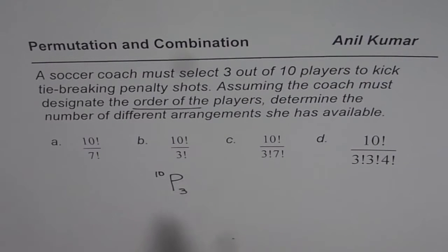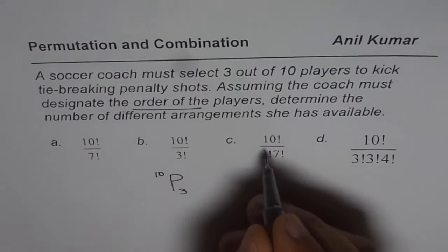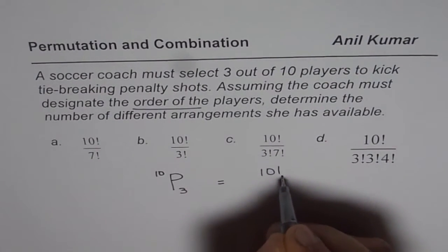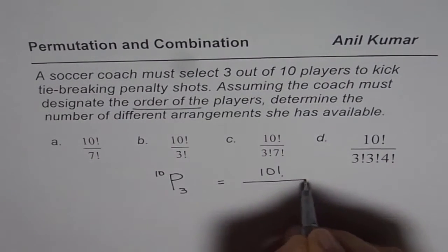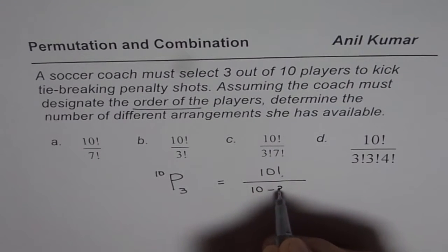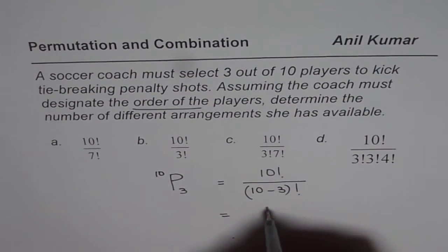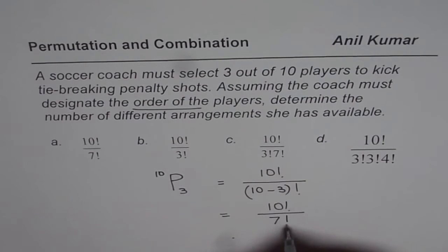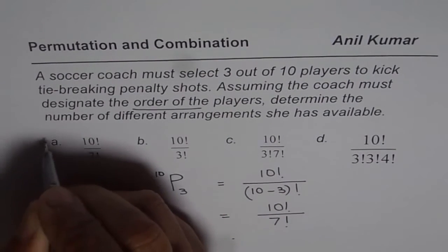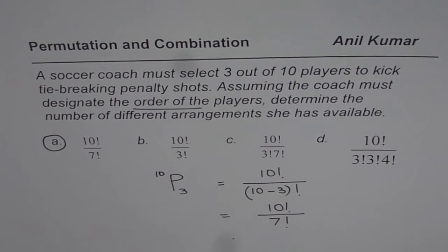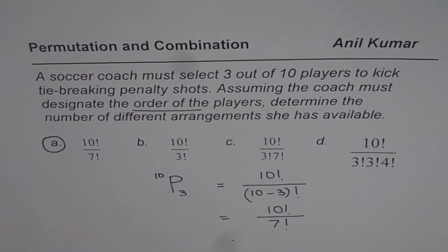Let's see how to write this in factorial form. It is 10 factorial divided by 10 minus 3 factorial, and that is 10 factorial divided by 7 factorial. So choice A is the right one. I hope that helps. Thank you.